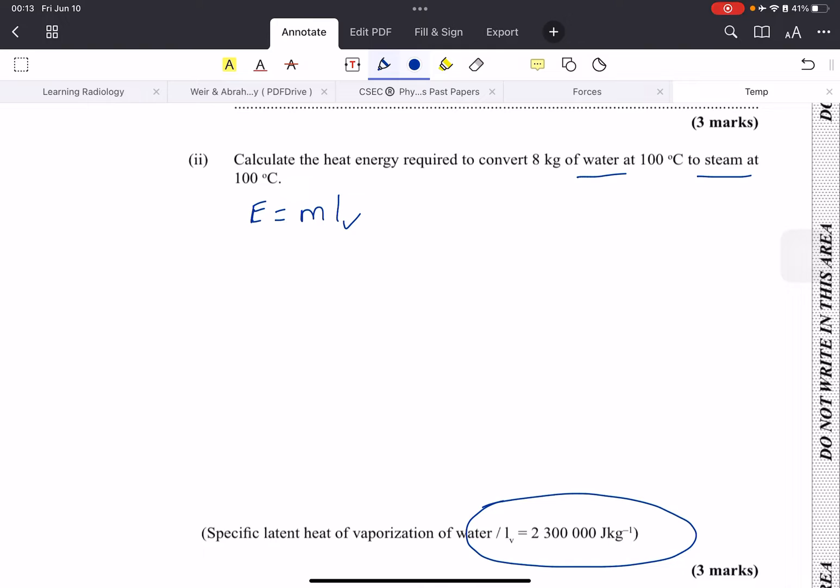To calculate the heat, we take the mass, which is eight, we multiply it by the latent heat, which is two million three hundred thousand.